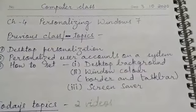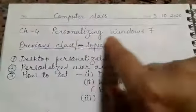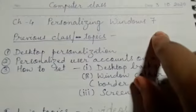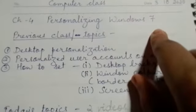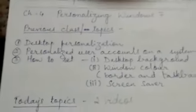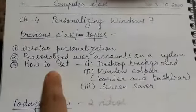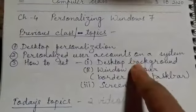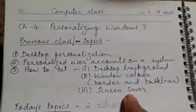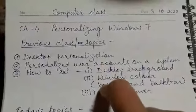Good morning children, hope you all are doing well. In computers we are doing Chapter 4: Personalizing Windows 7. In the previous class we saw what is desktop personalization, then we saw personalized user accounts on a system, and also how we can set desktop background, window color, and screensaver. Hope you all have practiced those points.